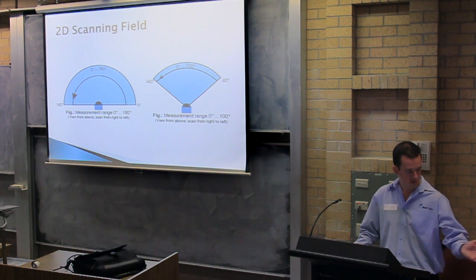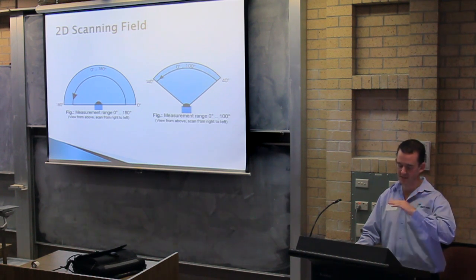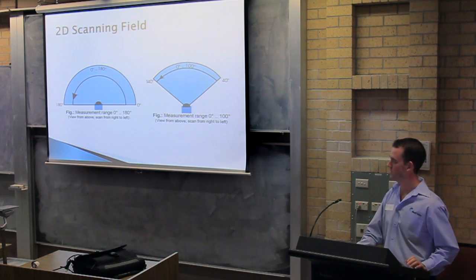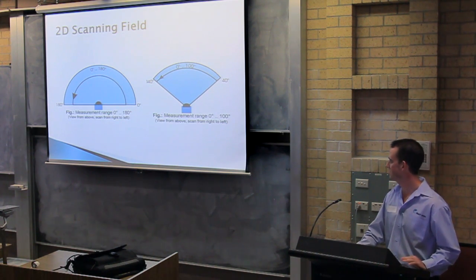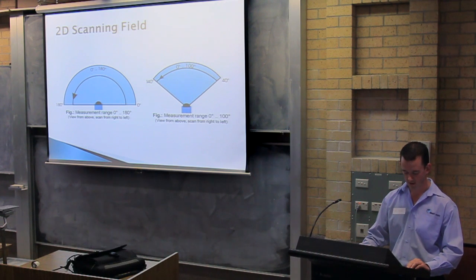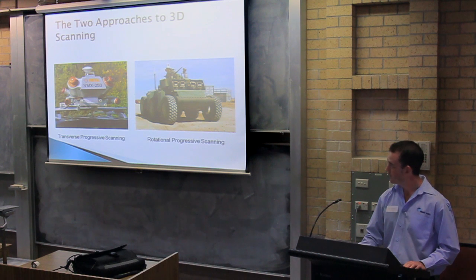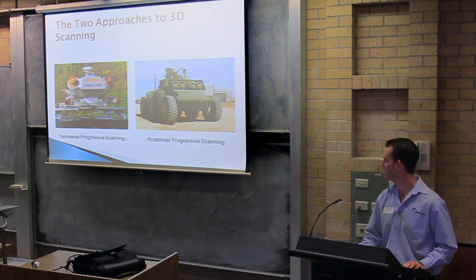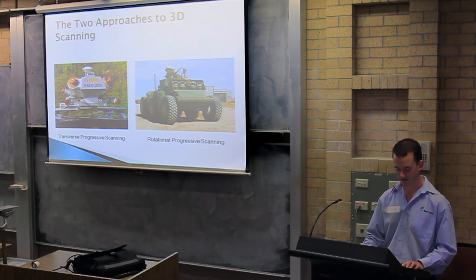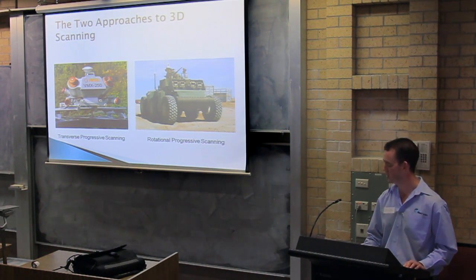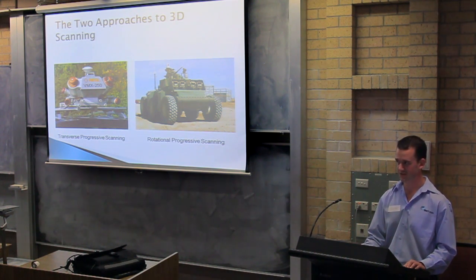We've got 2D laser scanners. They operate on the principle of taking laser distance measurements in an arc, usually between 0 and 180 degrees. Although, in some of the more modern applications, you can actually vary this number to reduce the scanning window. So how do we use 2D laser scanners for generating 3D data? Well, there are two approaches: transverse progressive scanning and rotational progressive scanning. To the left, you see a vehicle-mounted 2D laser scanner where 3D measurements are acquired by taking advantage of the forward movement of the vehicle. If the vehicle was to stop, then the scanner can no longer function.